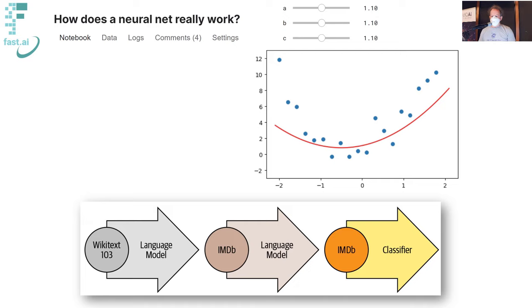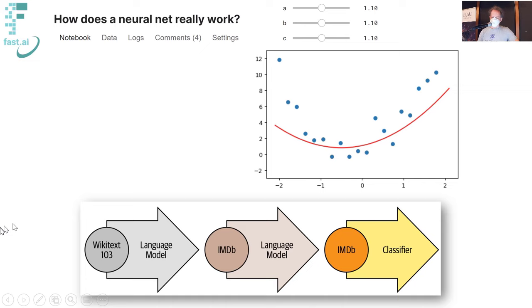Transformers didn't really allow you to predict the next word of a sentence — it's just not how they're structured. So they threw away the idea of predicting the next word and instead did something just as good: they took chunks of Wikipedia, deleted at random a few words, and asked the model to predict what the deleted words were. This is called a Masked Language Model. Other than that, the basic concept was the same as ULMFiT — they replaced the RNN approach with Transformers. Today we're looking at the Transformers Masked Language Model approach.